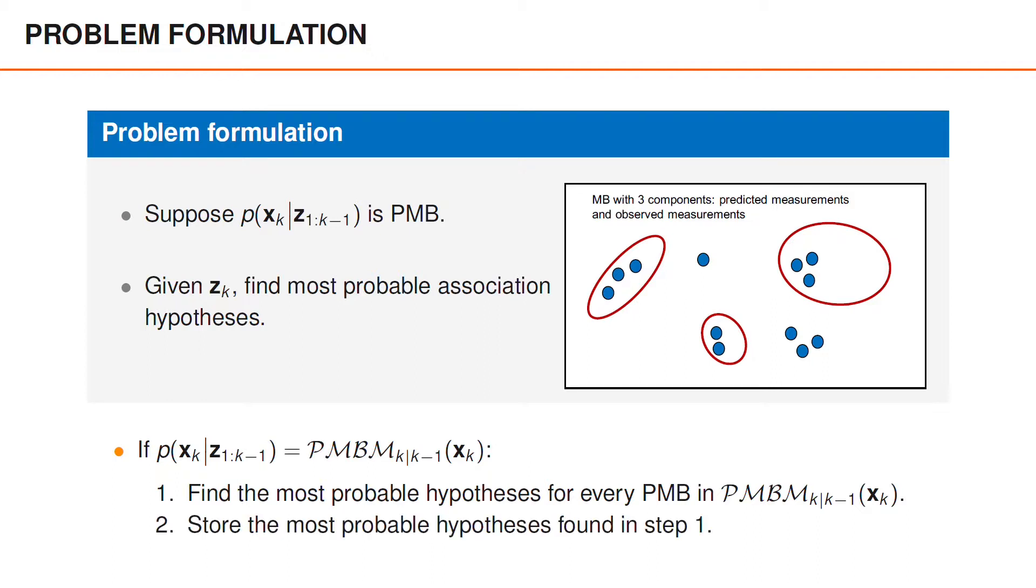In total, this gives us a list of hypotheses of moderate length that we can go through and identify the most probable hypotheses from step one. That is, as long as we can find probable associations for a single PMB distribution, we can use that solution to also handle PMBM distributions.